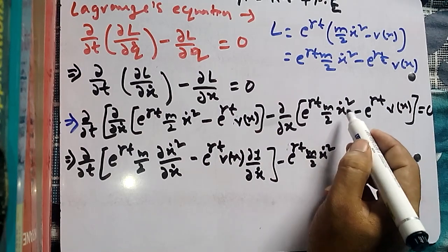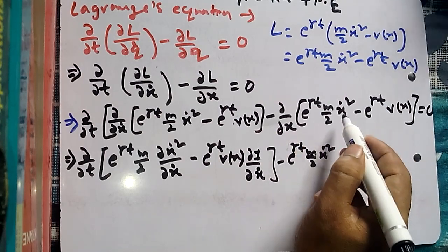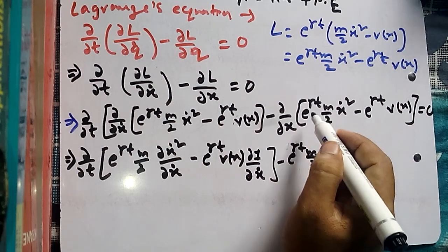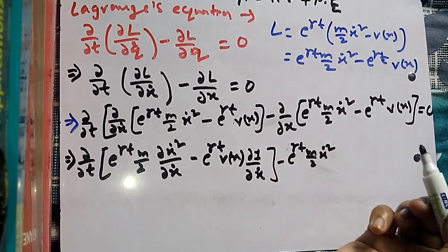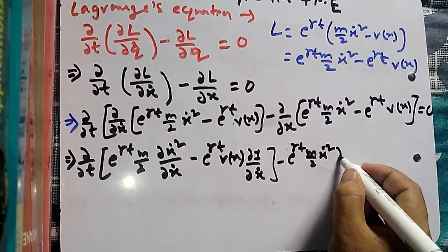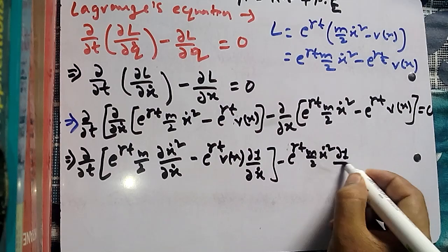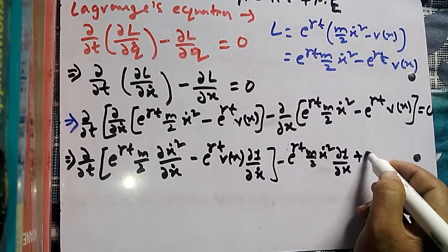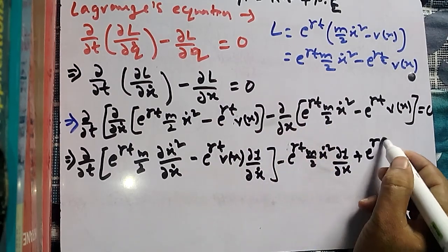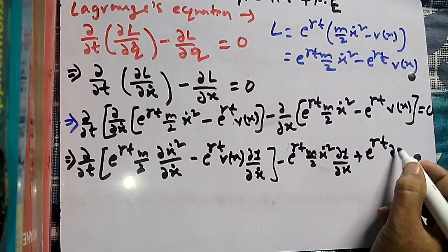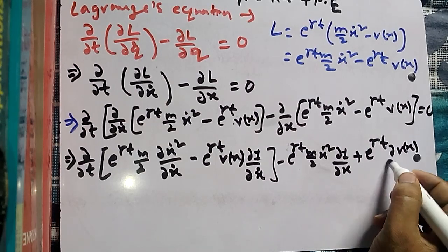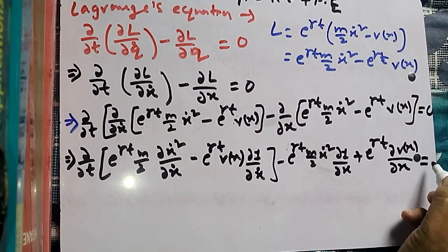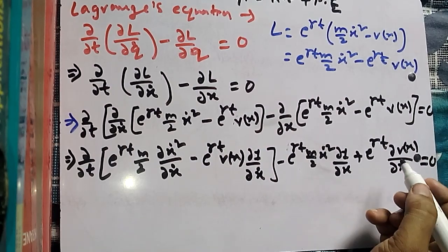For the ∂/∂x term: x-dot squared is not a function of x, m/2 is not a function of x, and e^(gamma t) is not a function of x — therefore the entire first term is constant with respect to x, giving zero. However, V(x) is a function of x, so its derivative is nonzero. We get plus e^(gamma t) times ∂V/∂x, equal to zero.